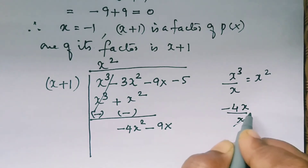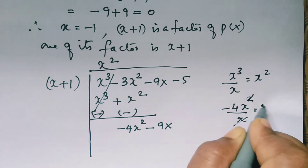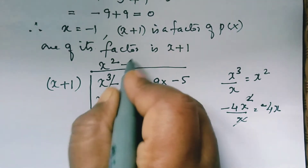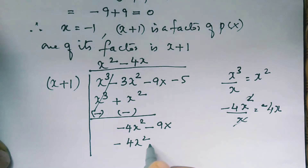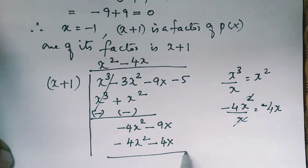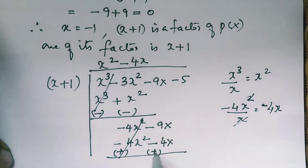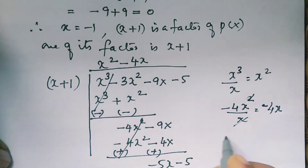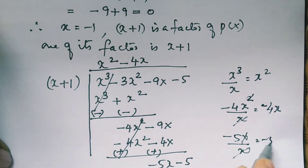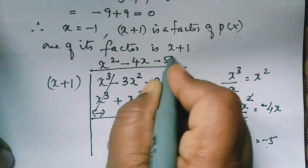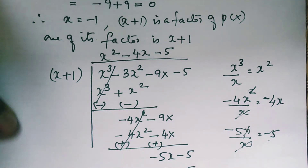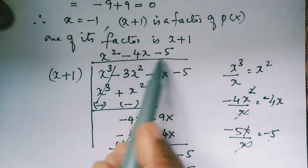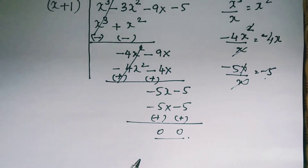Bring the next term down and repeat the same step: minus 4x square divided by x gives minus 4x. Multiply minus 4x by the divisor to get minus 4x square minus 4x. Change the sign; the first term gets eliminated, leaving minus 9x plus 4x, which equals minus 5x minus 5. Repeating the same step gives the next quotient term as minus 5. Multiply minus 5 with x plus 1 to get minus 5x minus 5, and all remaining terms get eliminated when you change the sign.